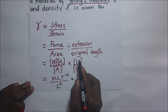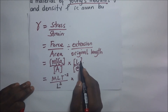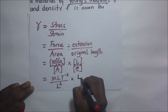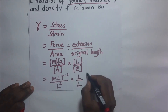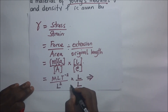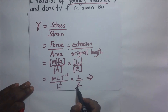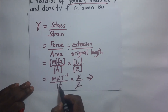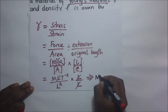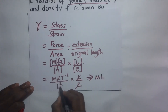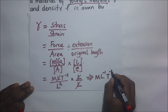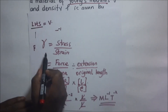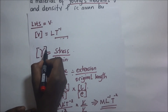Multiplying by original length over extension — since both are lengths — the L in the numerator cancels with the L in the denominator, and one L cancels with one of the L's in L squared. We remain with M L to the power negative 1 T to the power negative 2. So these are the dimensions of Young's modulus.